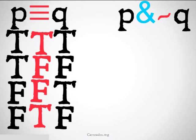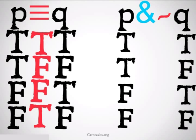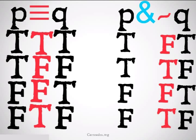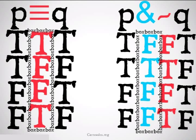Then we're going to fill in the truth tables for P and Q over here with our conjunction. We'll switch the Q's truth values for the negation. And finally, we'll fill in under the conjunction. Remember that the only time a conjunction is true is when both of the conjuncts are true.